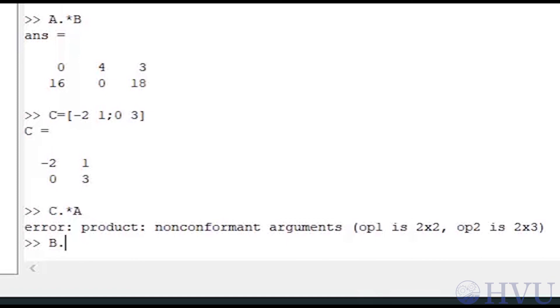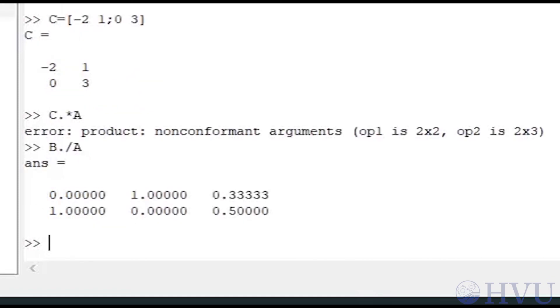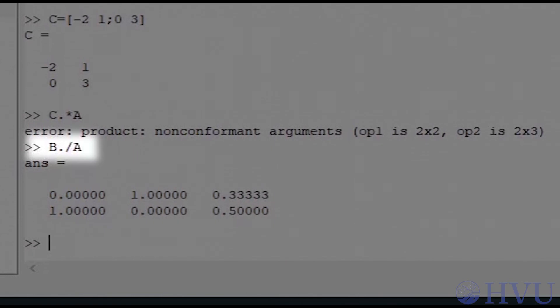Now let's use dot slash to divide the two arrays. Type B dot slash A. Each element in the result is the element in B divided by the corresponding element in A.